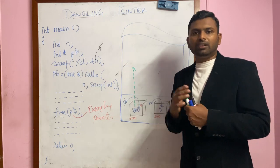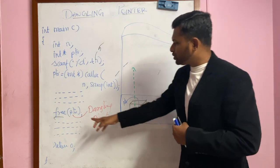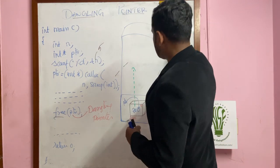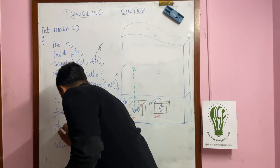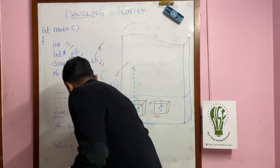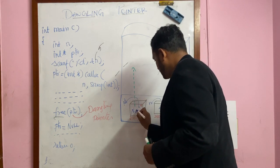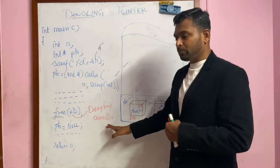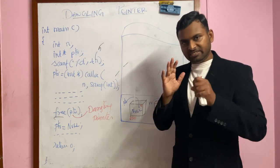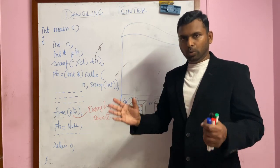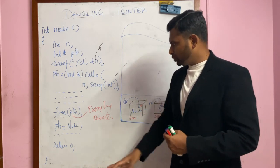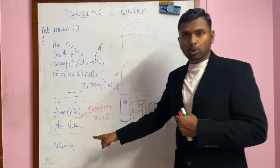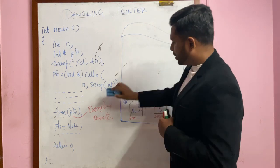A dangling pointer is very dangerous because you have a pointer referencing something that no longer exists — you think it's there but it's actually not. So as soon as you release memory using free(), the very next line you must write: ptr = NULL. This makes the pointer null so it doesn't point anywhere anymore, and it is no longer a dangling pointer. This is the best practice: release the memory with free(), then immediately assign NULL to the pointer.